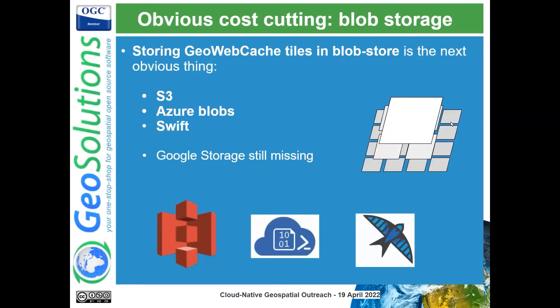The next step has been the obvious cost-cutting measure: blob storage for tile caches. We got early support for storing tile caches in S3, Azure Blob, and Swift. At the moment we don't have Google Storage support, but again it's just another plugin that needs to be written.